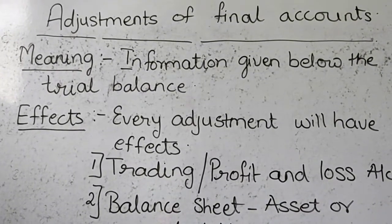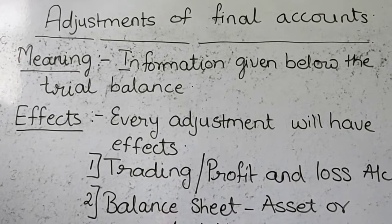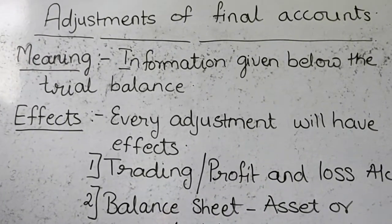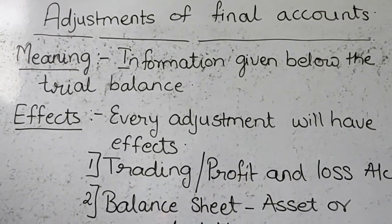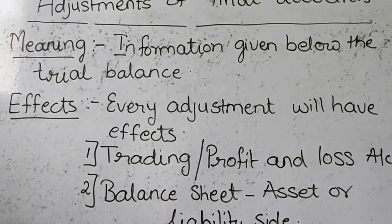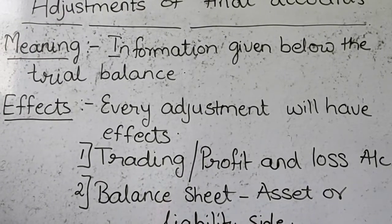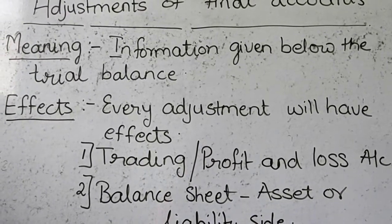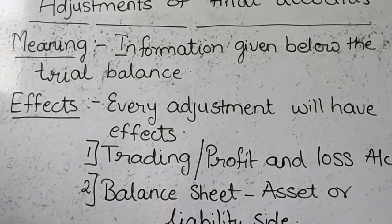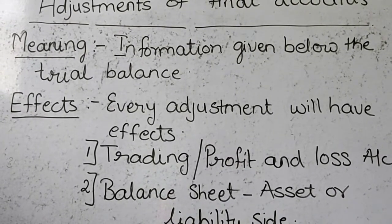First of all we will understand what is the meaning of adjustments. Adjustments means the information which is given below the trial balance. The details that are detected after all the accounts are closed and the trial balance is prepared are called as the adjustments.